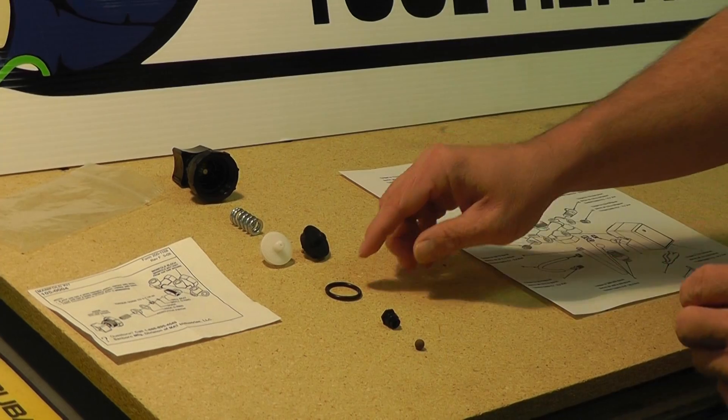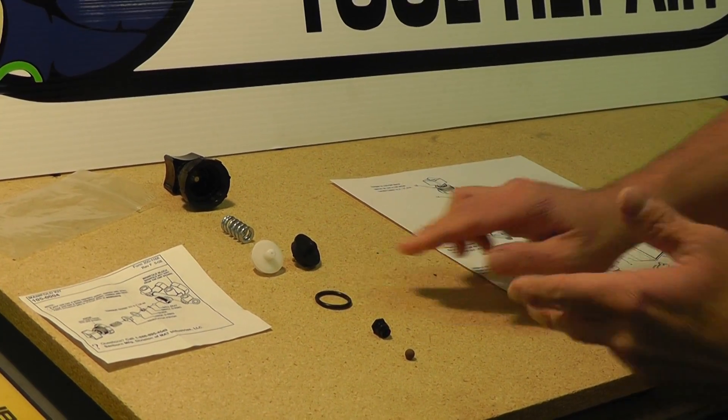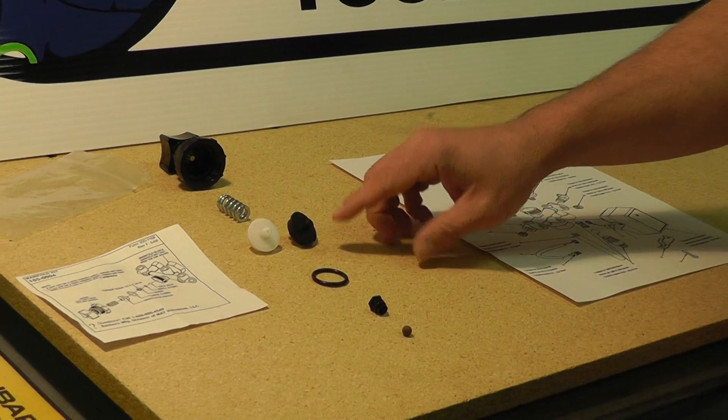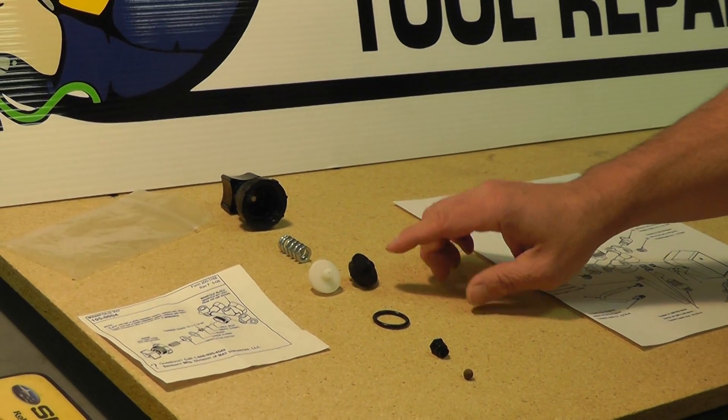So we screw that down in. The next piece that goes on is the large O-ring that you see here. You see it in the diagram. The next part, the regulator piston.